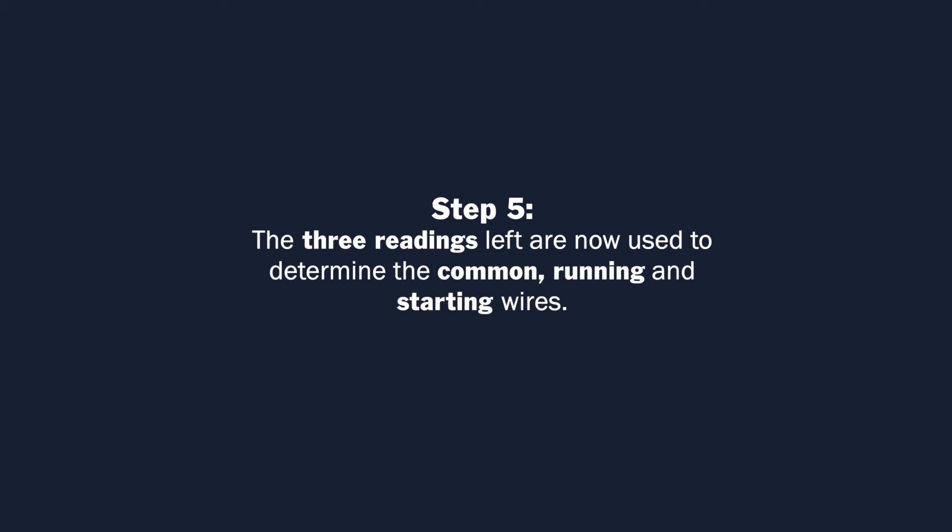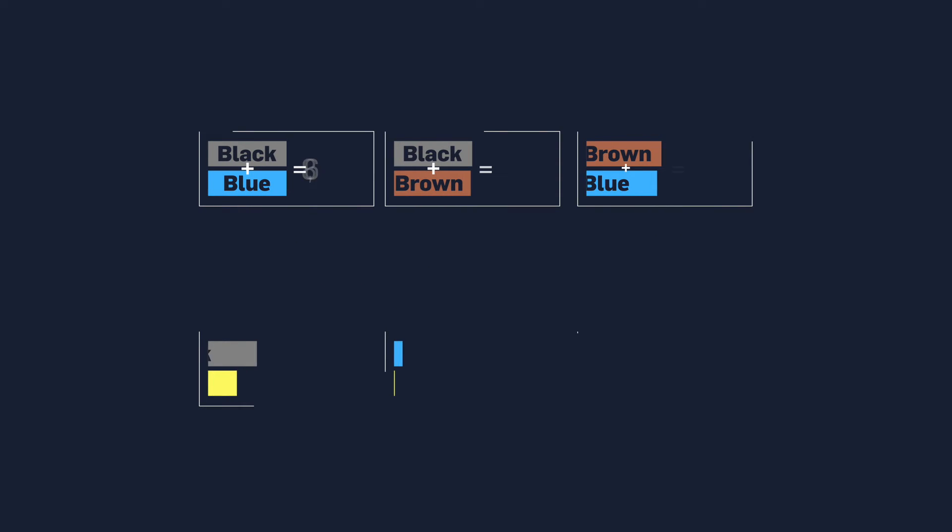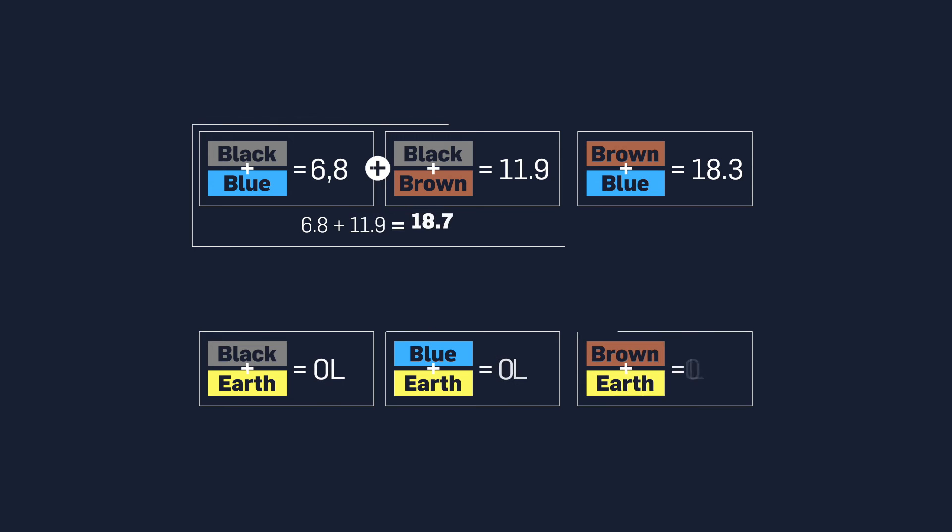Step 5. The three readings left are now used to determine the common, running and starting wires. If the two lowest readings are added together, then a value that is the same or higher than the highest reading should be obtained. The difference would be greater for longer cable lengths. Note the wire that is present in both of the two lowest readings. This is the common wire. Note the other wire present in the lowest reading. This is the running wire. Note the other wire present in the second lowest reading. This is the starting wire.